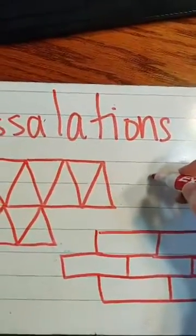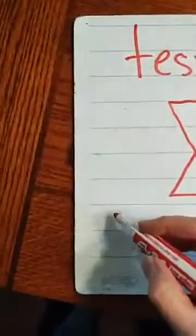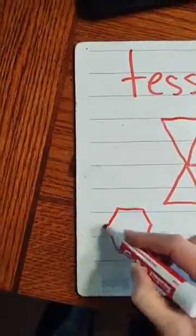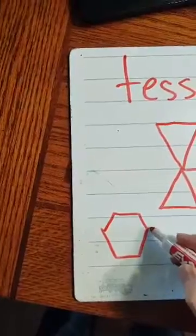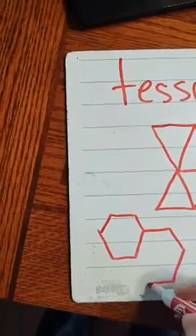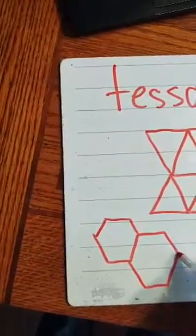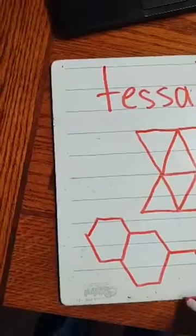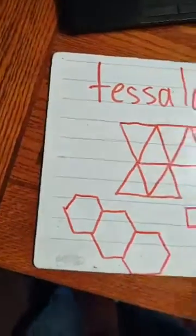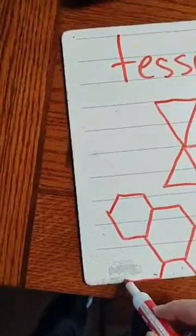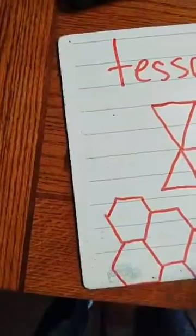A hexagon will work for a tessellation. Remember, a hexagon has six sides. So my hexagons will fit together nicely. And then I can fill in my other hexagons here. My hexagons are getting a little squatty down there, but you get the point. They fit in there.